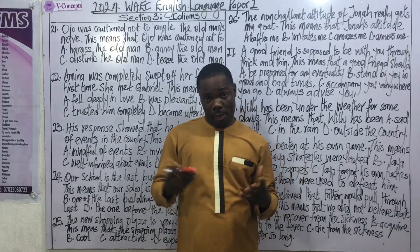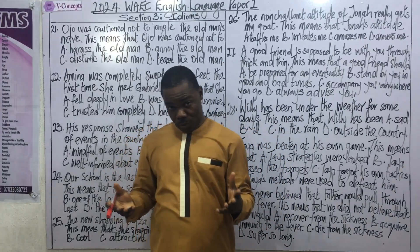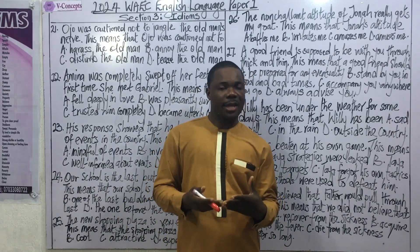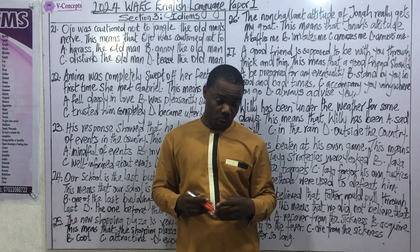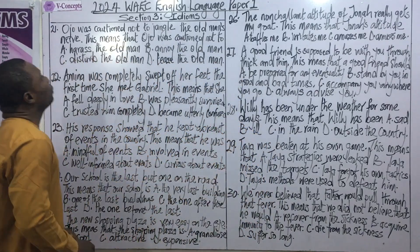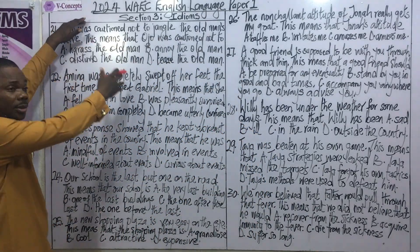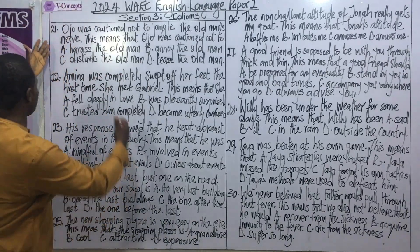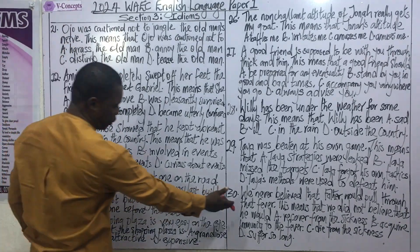Welcome to the third episode of our video series where we are reviewing this year's 2024 WAEC English Language Paper 1. In this video we shall be considering the third section of the paper, which covers questions 21 to 30.